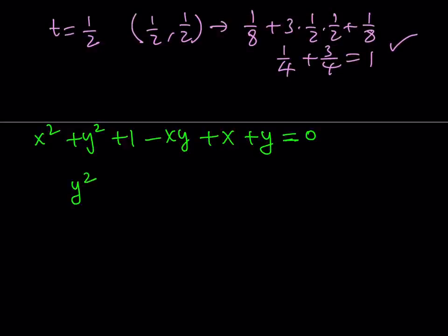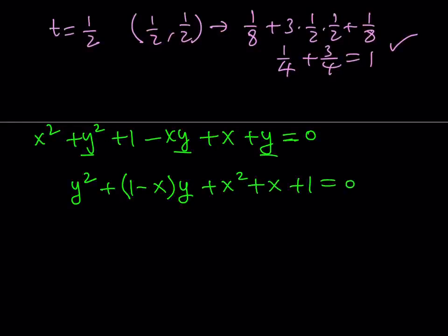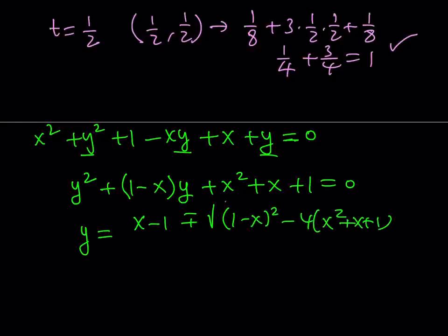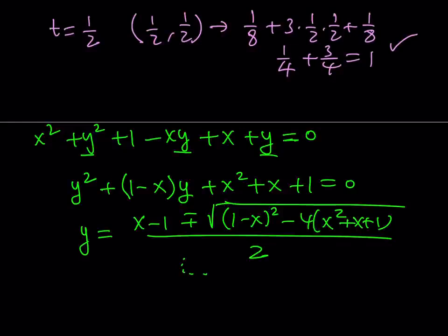You can write it as y squared, and then minus xy as the quantity (1 minus x) multiplied by y, with everything else as a constant, ending up with x squared plus x plus 1 equal to 0. From there, set up the quadratic formula: negative b plus or minus the square root of b squared minus 4ac, all over 2. From there you deal with what's under the radical. I'm not going to spend too much time on this because I want to focus on the other method, which is really cool.